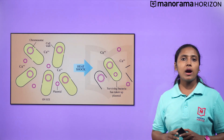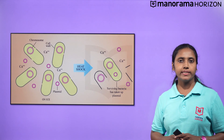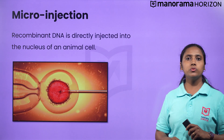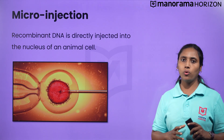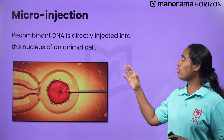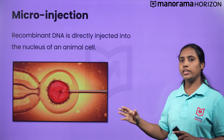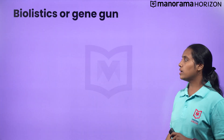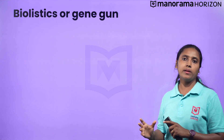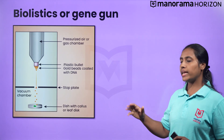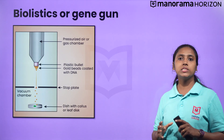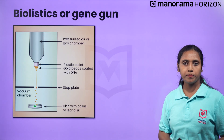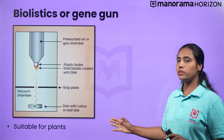There are also other methods for transfer of desired DNA. The first is microinjection, where recombinant DNA is directly injected into the nucleus of an animal cell. Another method is the biolistic or gene gun method, where cells are bombarded with high-velocity microparticles of gold or tungsten coated with DNA. This method is suitable for plants.